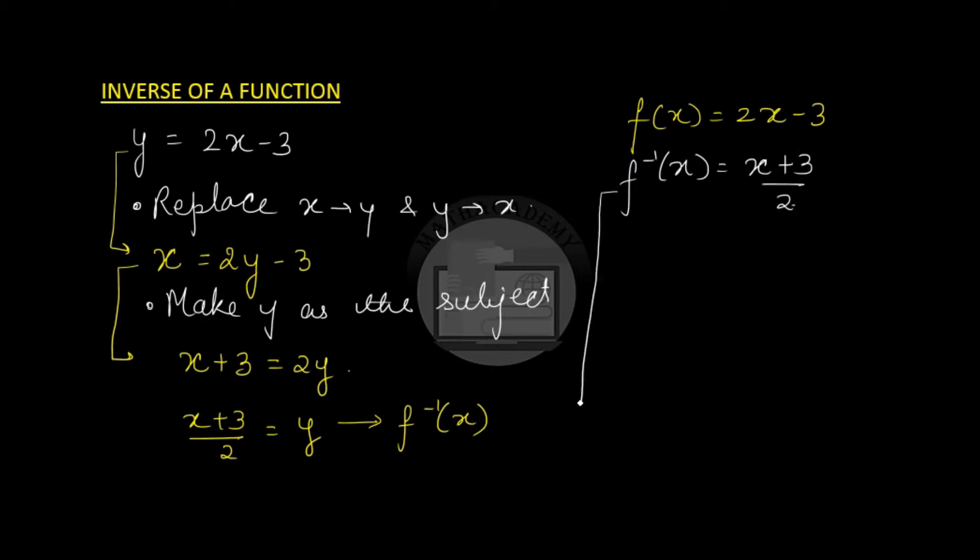Take one more example. Let our function be f(x) equals 1 upon (2x minus 3). To find f inverse of x, we have to first do the swapping. Swap x by y and y by x, so f(x) is nothing but y, so it becomes x equals 1 over (2y minus 3). Now make y the subject.